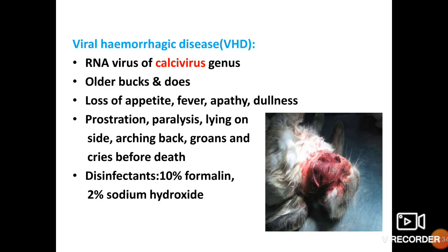Viral hemorrhagic disease is caused by calicivirus and mostly affects older bucks and does. Clinical signs include loss of appetite, fever, apathy, dullness, prostration, paralysis, lying on the side, arching back, groans and cries before death. Disinfectants used are 10% formalin and 2% sodium hydroxide. There is no effective treatment and prevention is only by vaccination.